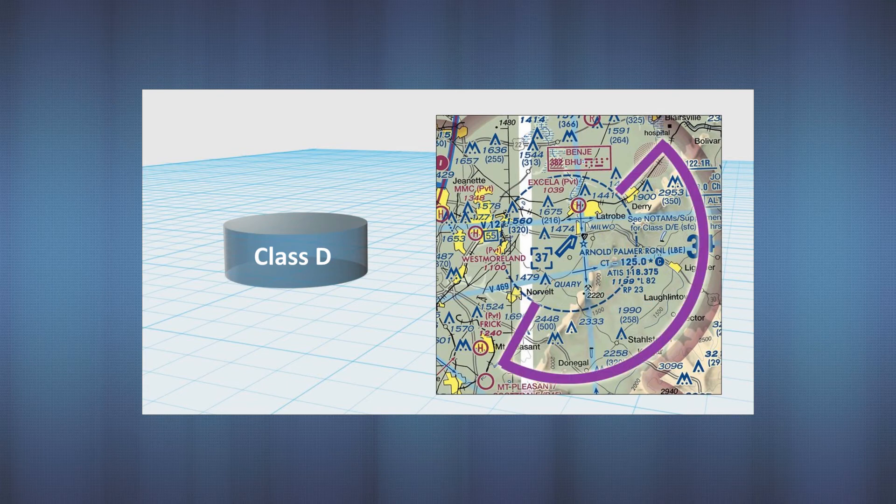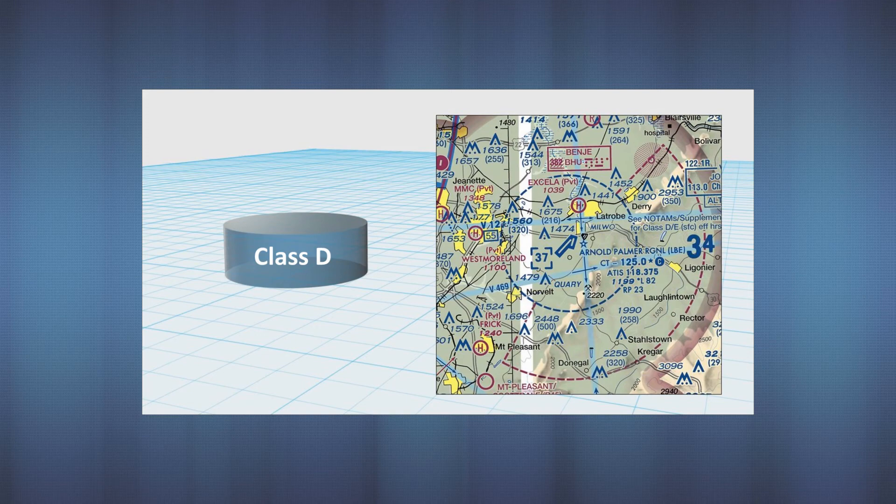Now, note this dashed magenta border just outside of the Class D. This represents Class E that starts at the surface. Because the Class E surface area is associated with an airport, you'd have to get an authorization from the FAA to operate there.